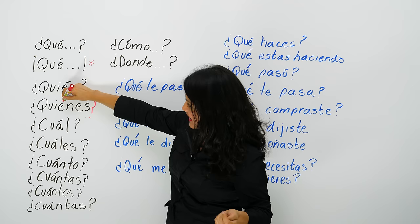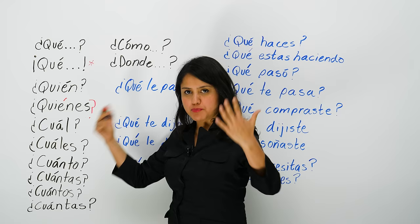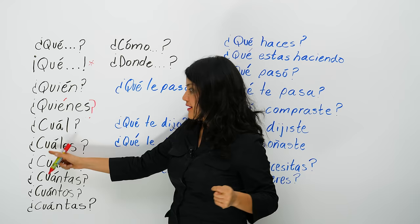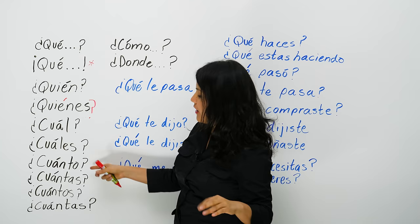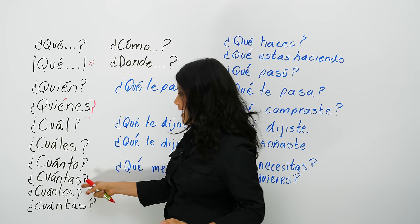Sorry about that — I put the accent upside down. Estoy un poco loca hoy. Quiénes con acento. Cuál — which. Quiénes — who in plural. Cuáles — which, but plural, when you're asking about more than one thing. Cuánto — how many. Cuántas — how many, if you're talking about plural and feminine.